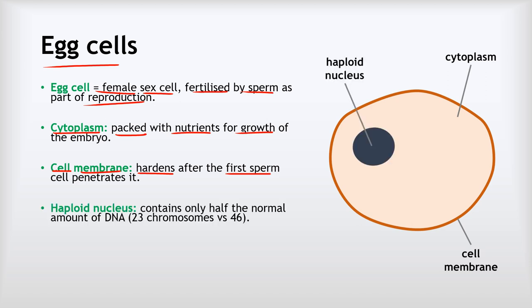The next adaptation is what we call a haploid nucleus. Haploid means that the nucleus contains only half the normal amount of DNA — it contains 23 chromosomes rather than the normal 46. A chromosome is just a large DNA molecule. All of your cells contain 46 chromosomes except for your egg or sperm cells, which are haploid, so they've only got 23.